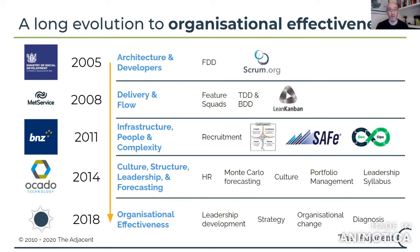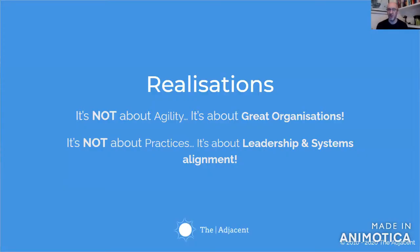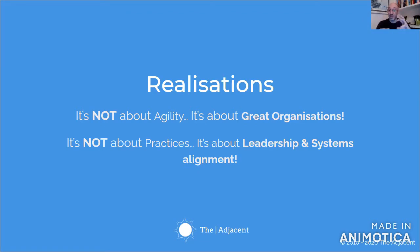Most recently I was at Ocado Technology as head of organizational effectiveness, adding HR change, portfolio management, and forecasting. But I was never getting to the end of the game. The key realizations were: it's not about agility — agility is not the goal. The goal is great organizations, amazing places to work. And it's not about any individual practice. It almost always came down to the leadership, the systems, and the friction and alignment of all those pieces together as one big complex operating system.